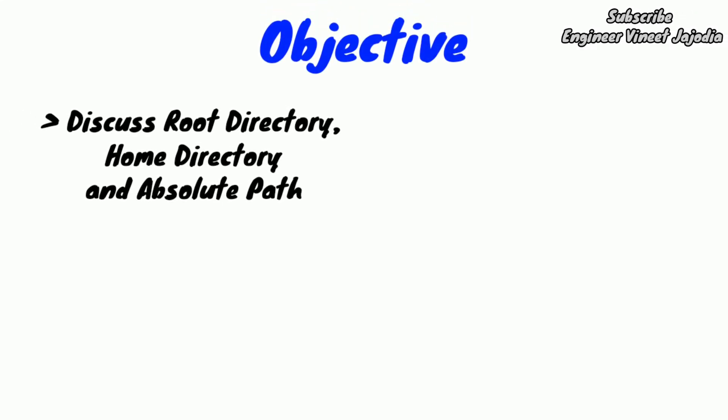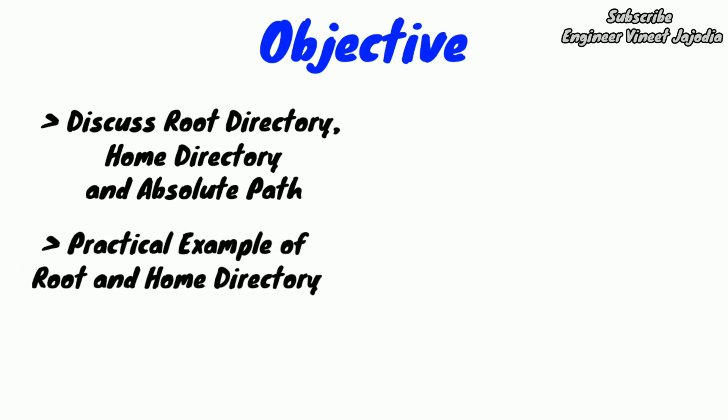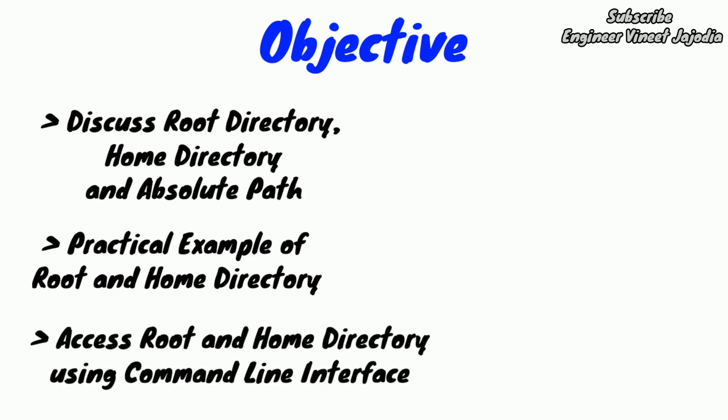The objectives of this video are: we are going to talk about what is root directory, home directory, and absolute path. Second, we are going to see a practical example of root directory and home directory. Third, we are going to see how to access the root directory and home directory using the command line interface.